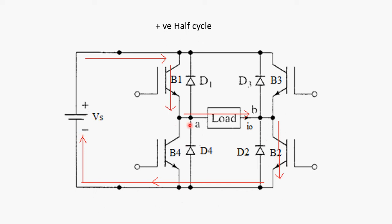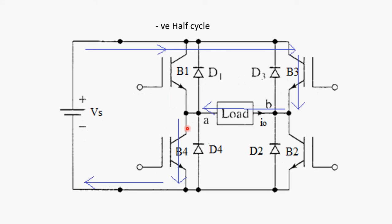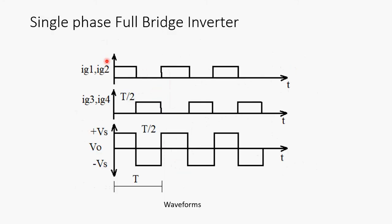Current flows from A to B and point A is positive. This can be seen in waveforms also. Simultaneously, we will draw the waveforms.